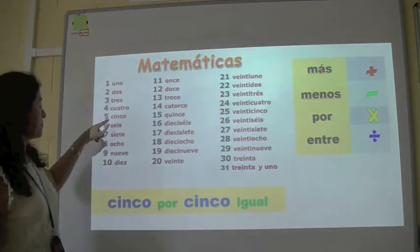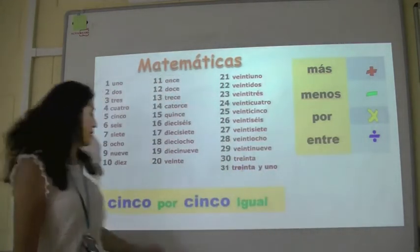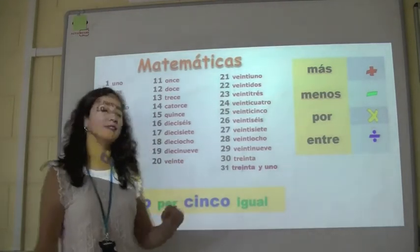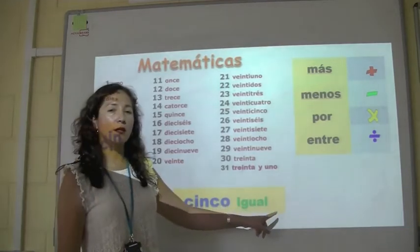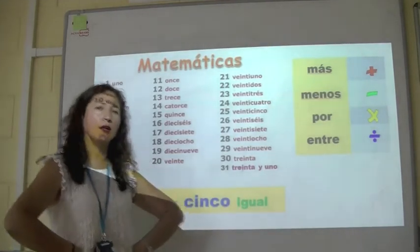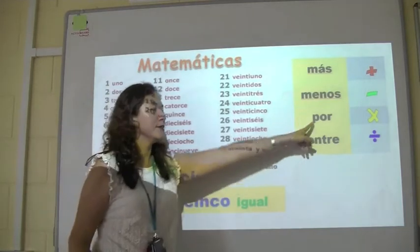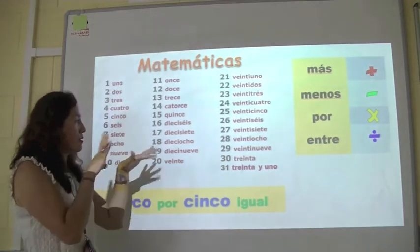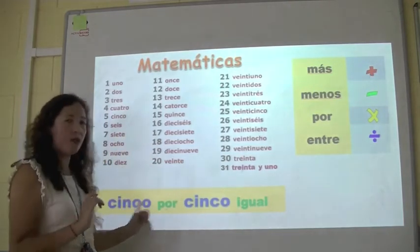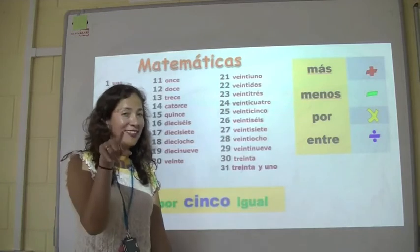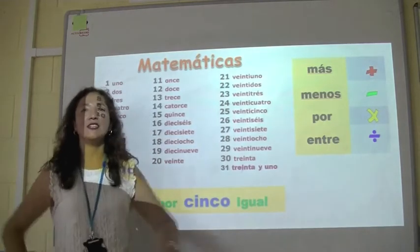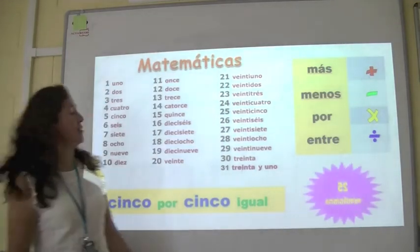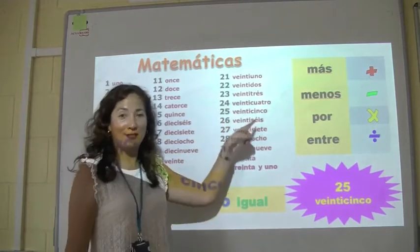Cinco por cinco — five times five. Cinco por cinco, igual — veinticinco. Muy bien! Veinticinco, cinco por cinco igual veinticinco.